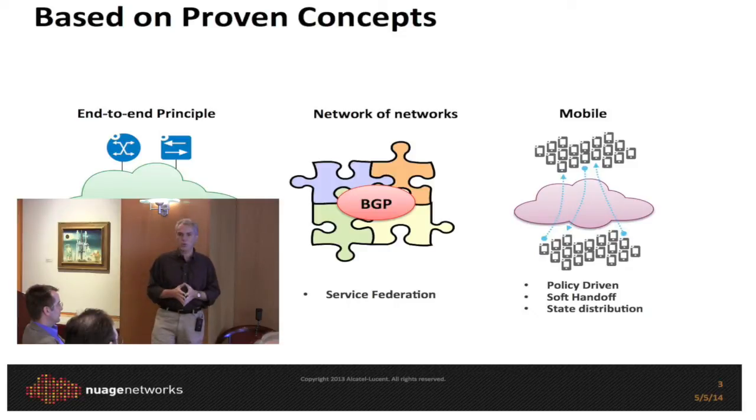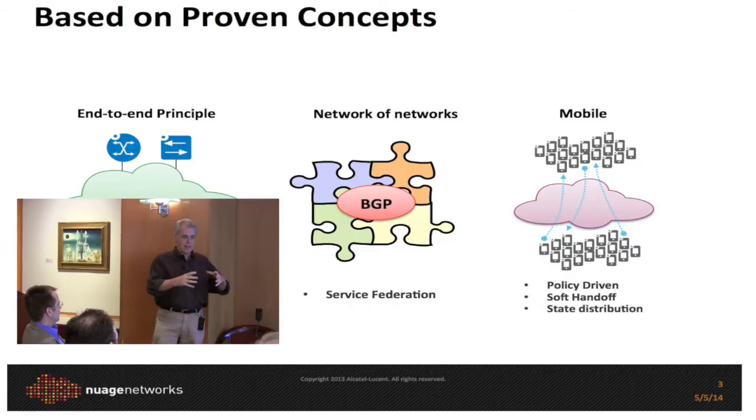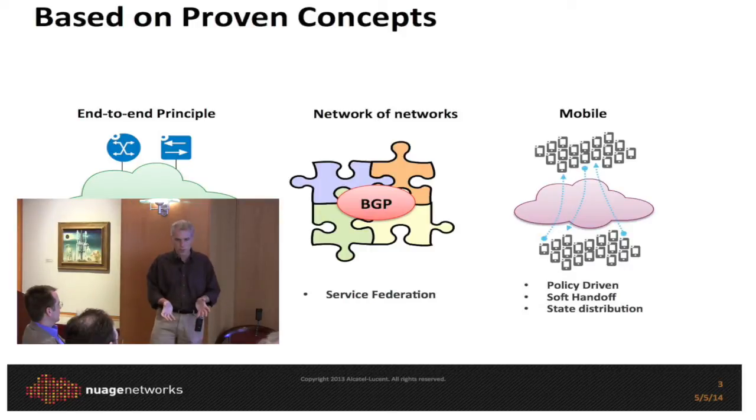The second concept is that the internet and every network is a network of networks. From the get-go, we did not try to solve the problem within an isolated island or a single pod. Our goal was to solve the problem across networks of networks, across different administrative domains. We rely on the same techniques that have made the internet scale — things like BGP — to allow us to scale across multiple availability zones and multiple administrative domains.